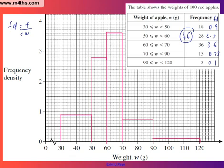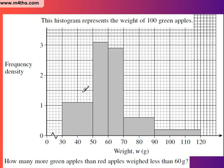So the answer is 46. So let's work out how many green ones there were. We're interested in this part right here. Now frequency is class width multiplied by frequency density. And that will give us the frequency.